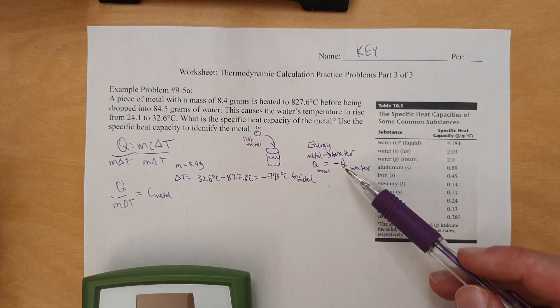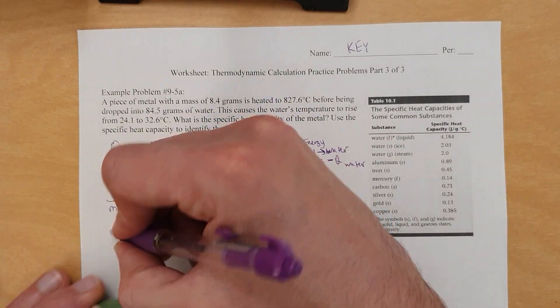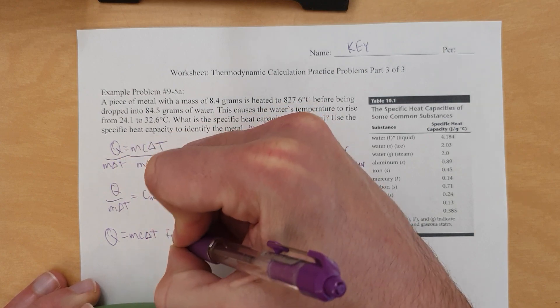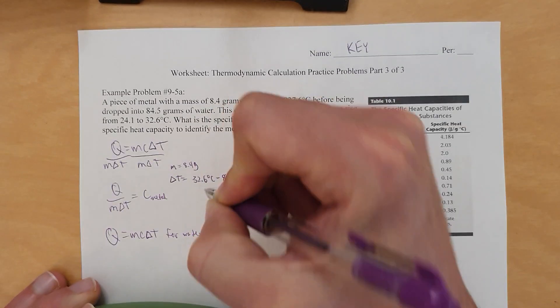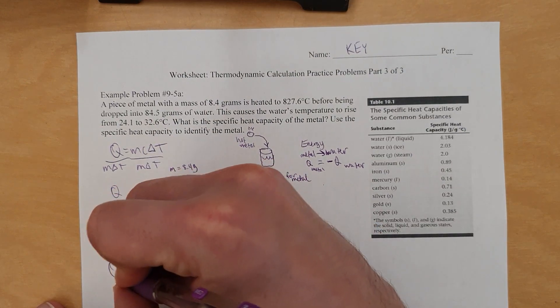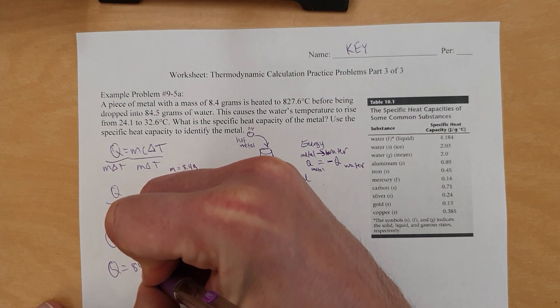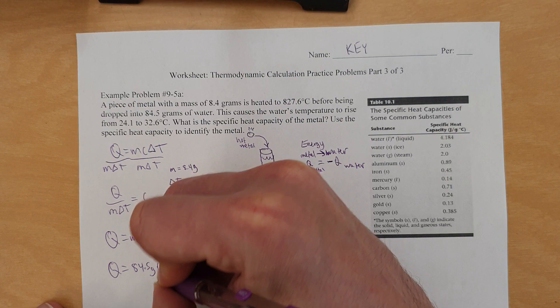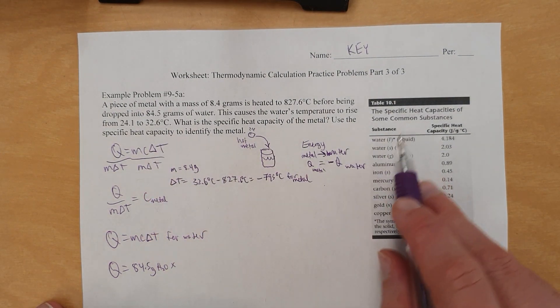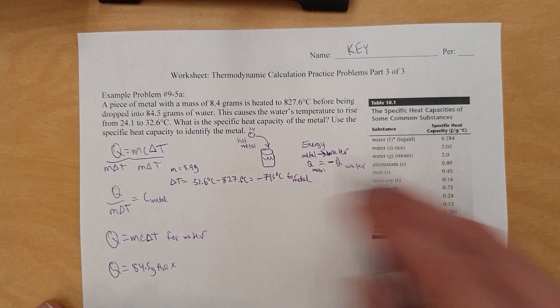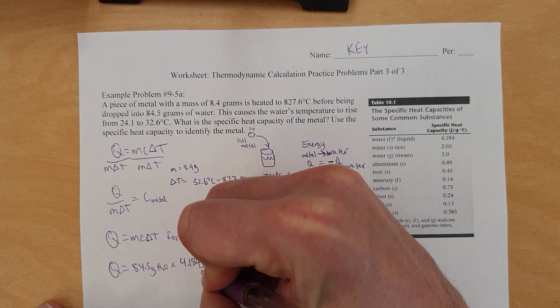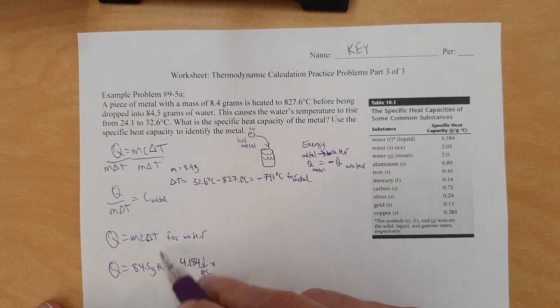Okay, so we've got to find how much energy the water gained. Now, so Q equals MC delta T for water. Let's do that. The mass of the water is that. So Q equals 84.5 grams of H2O times specific heat capacity. At this temperature range, water is liquid.